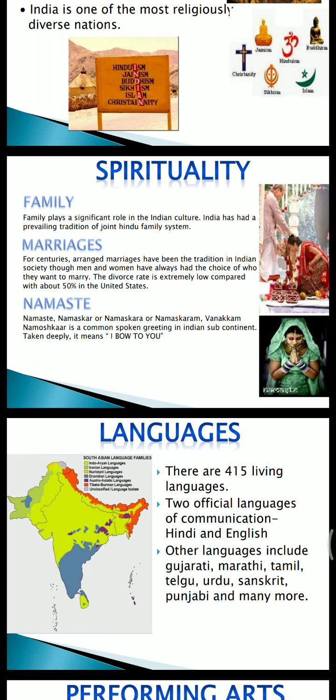Marriages: for centuries, arranged marriages have been the tradition in Indian society, though men and women have always had a choice of who they want to marry. The divorce rate is extremely low compared with about 50% in the US. People live with their partners for a long time, often for their whole life.